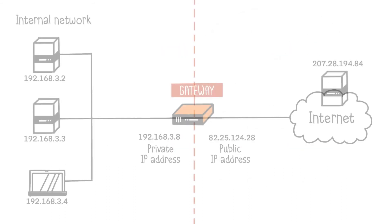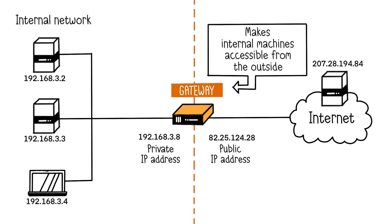Destination NAT allows making internal machines accessible from the outside using a single public IPv4 address. Here, it's an external machine initiating a communication request with an internal machine. The external machine will contact the public address of the gateway, while also specifying the destination port of the service it wants to reach — for example, port 80 for HTTP. To connect to the first server, the external machine connects to the public address of the gateway on port 80. The gateway then translates this address to the private IP address without changing the port.